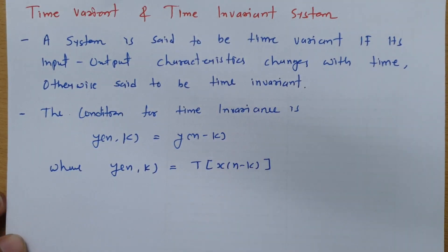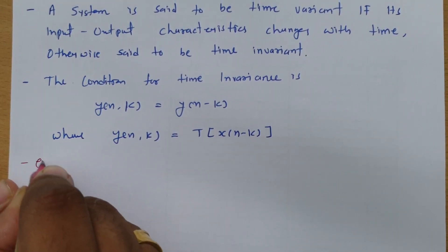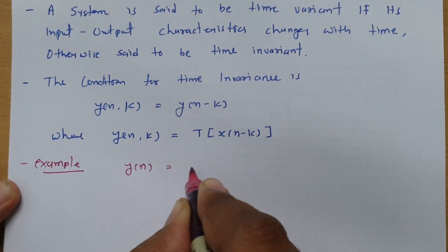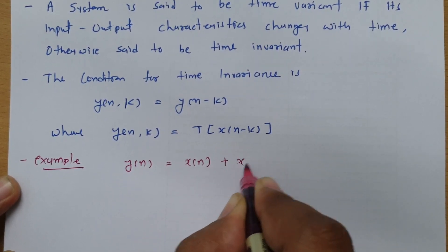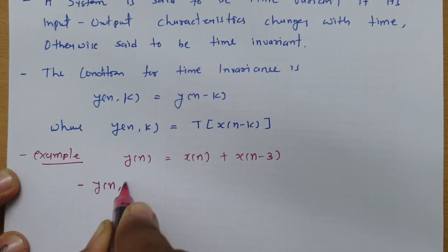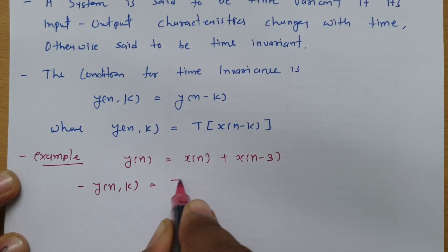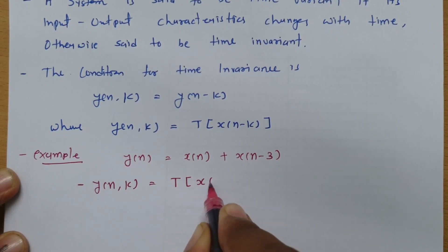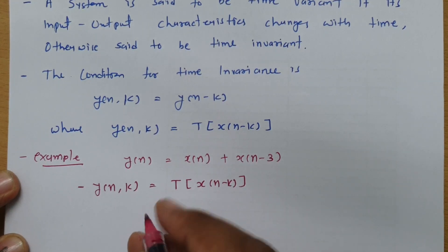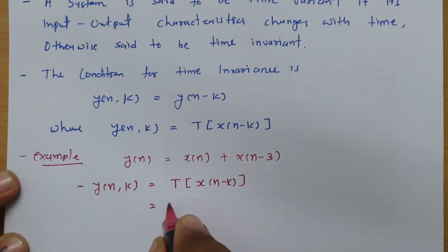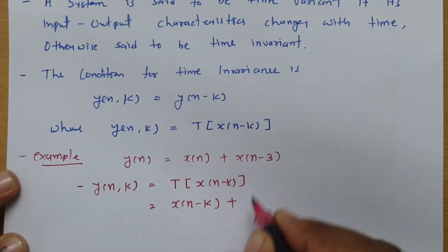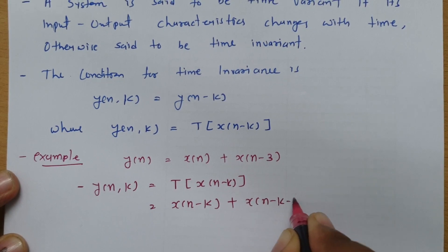I will be considering a few examples to explain this. For the first example, suppose y(n) is given by x(n) plus x(n minus 3). In that case, if you calculate y(n, k), that is the response with x(n minus k) as input. Here, instead of x(n) we replace it with x(n minus k), so x(n) changes to x(n minus k) and x(n minus 3) changes to x(n minus k minus 3).